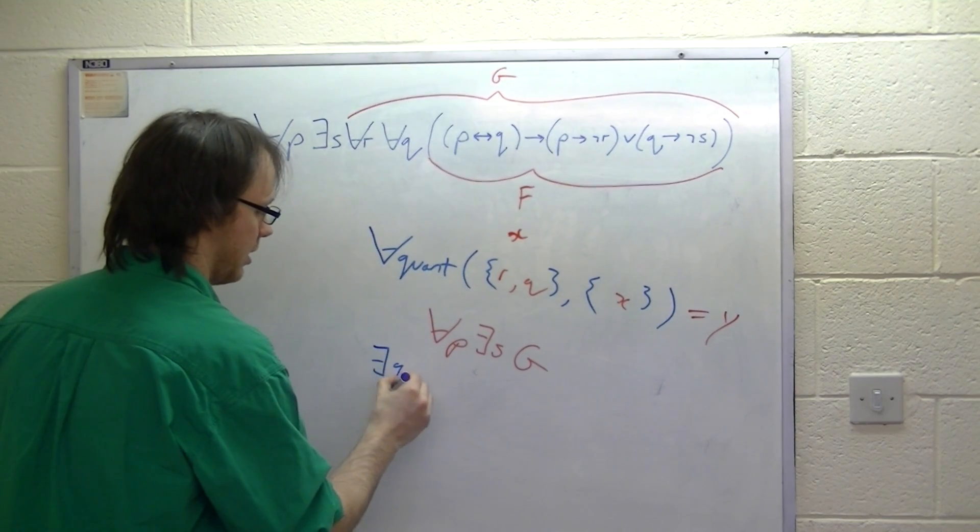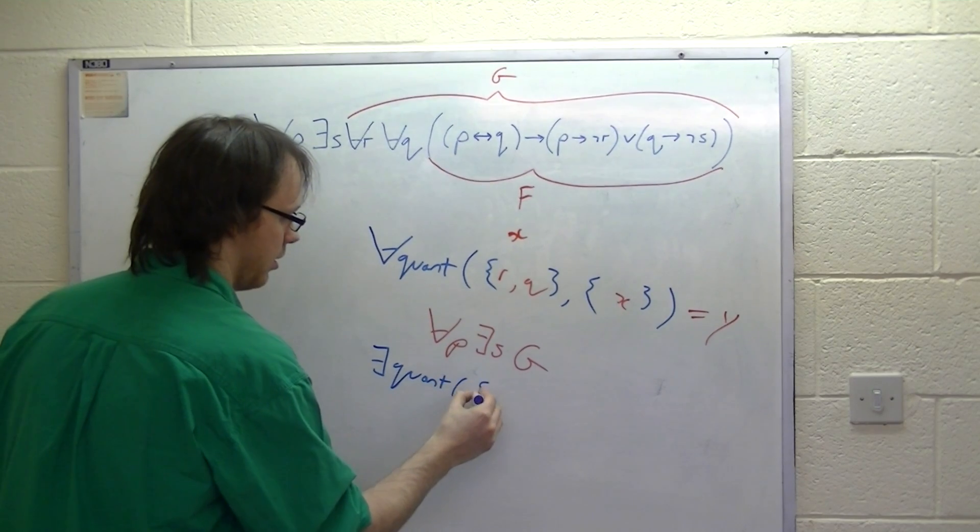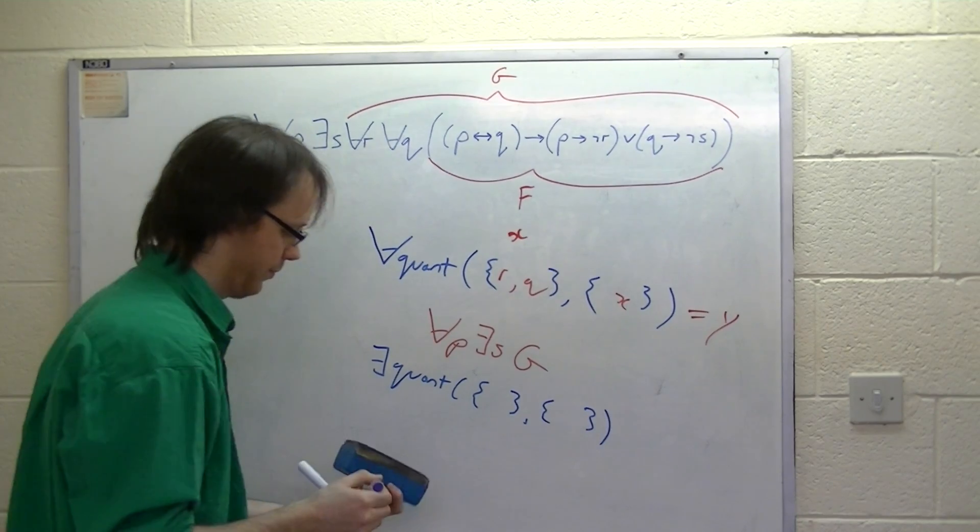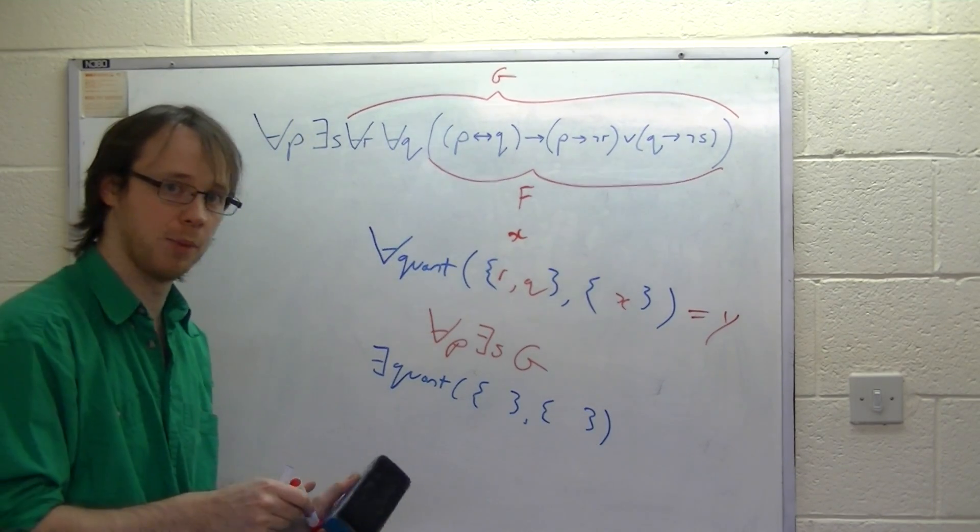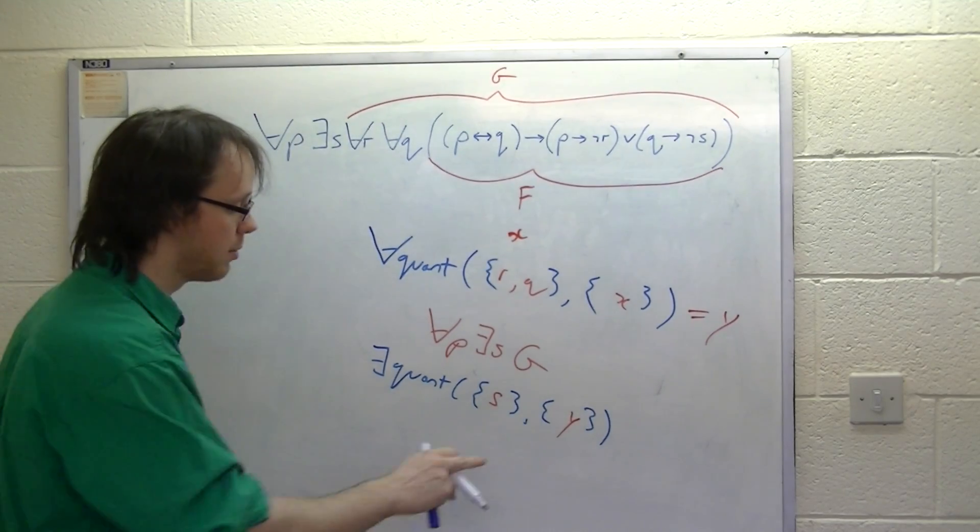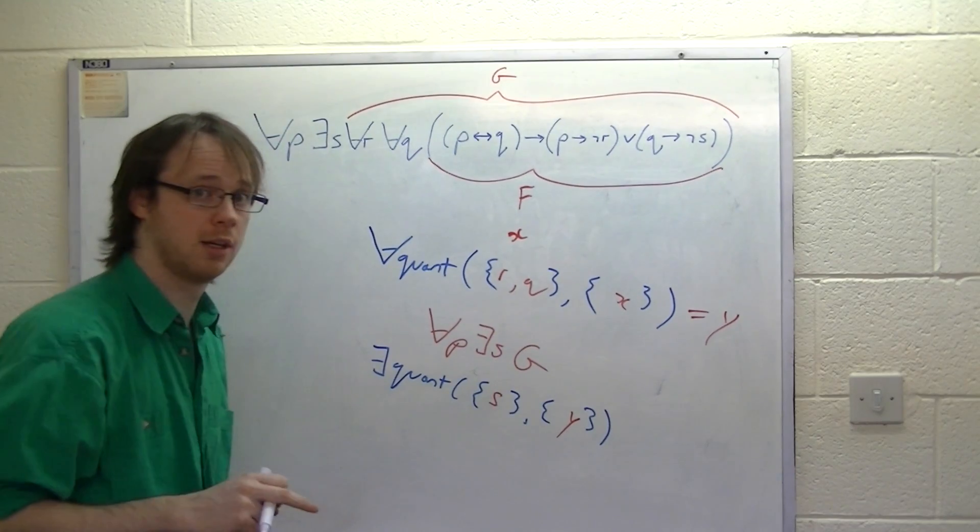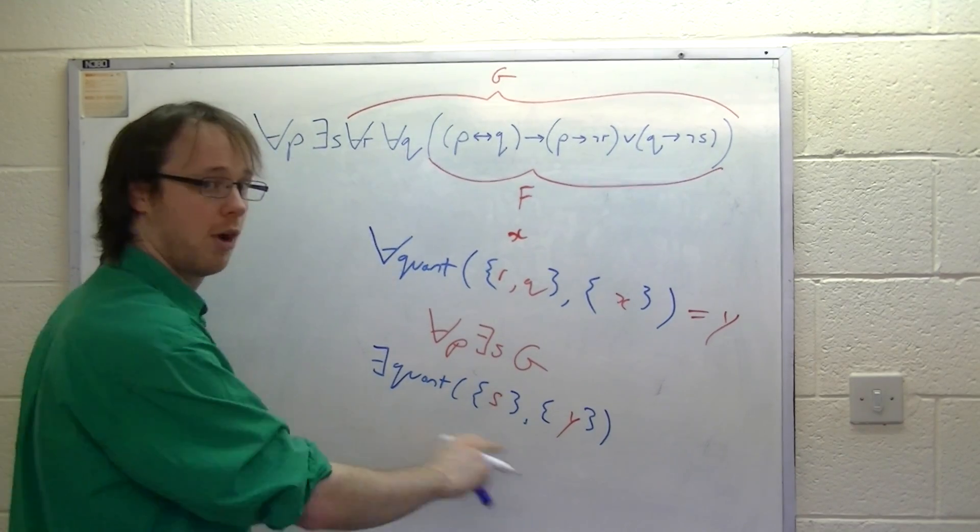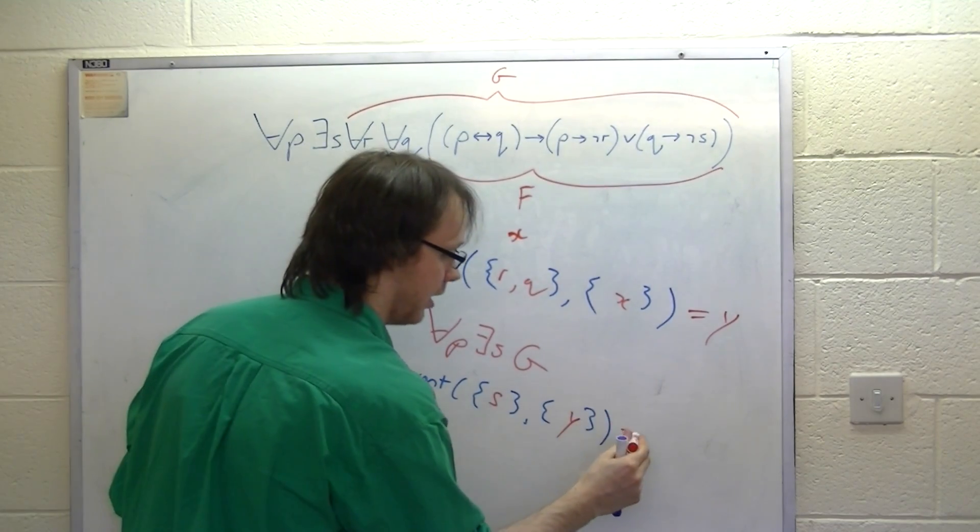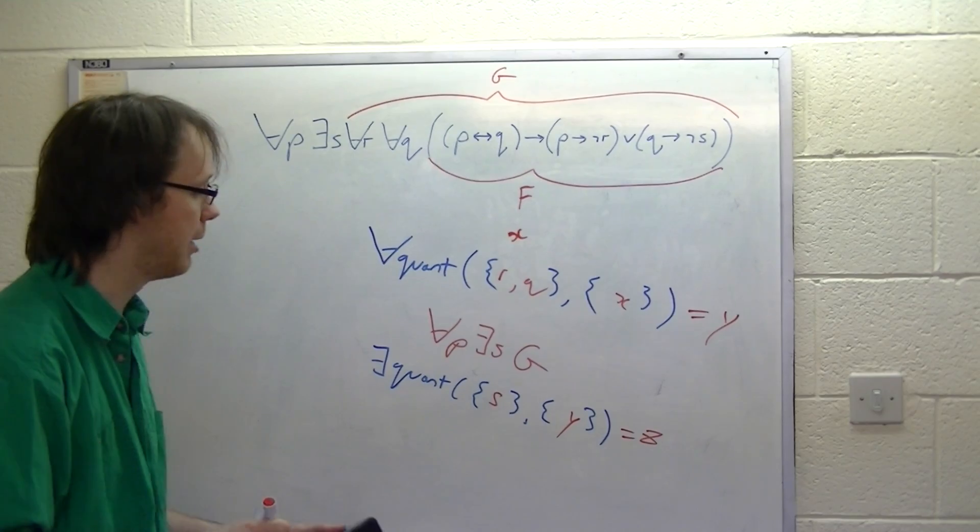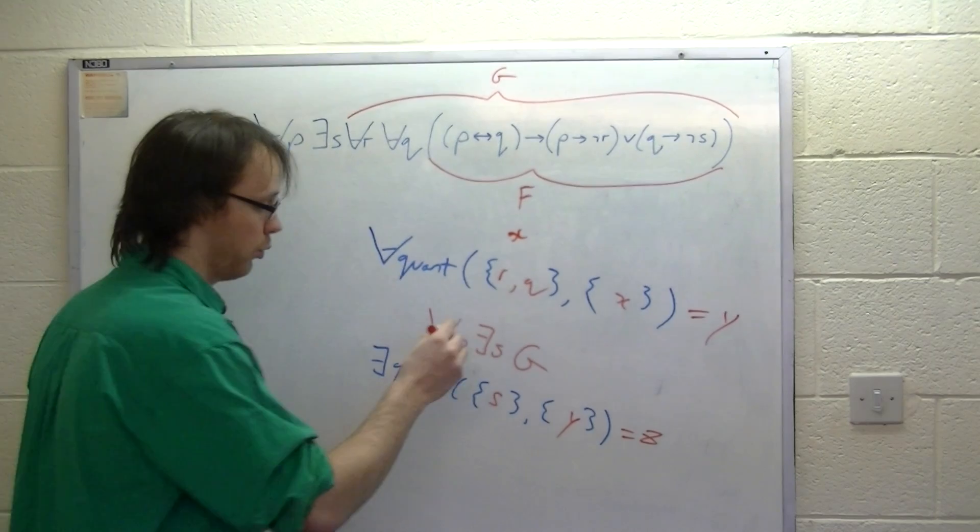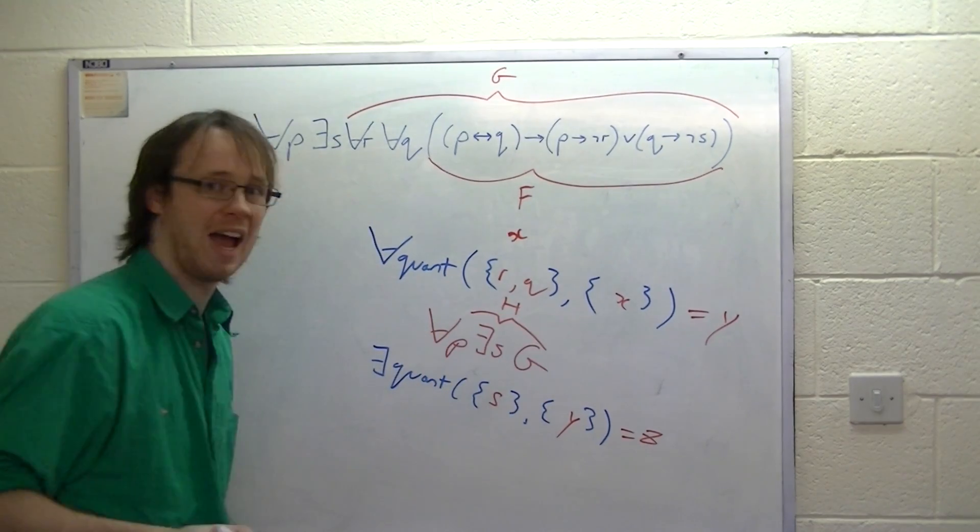And we've got exists quant, and the variable that we're concerned with is S, and the node is Y. Now, this is important, Y represents G. So we're going to run this algorithm on node Y for variable S, and we're going to pop out a node, which is going to be called Z, and we've reduced this again.